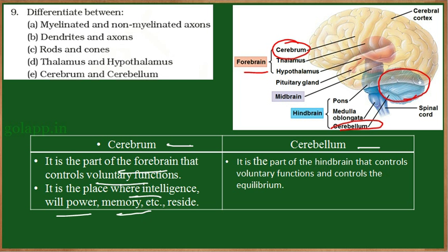The cerebellum is a part of the hindbrain that controls equilibrium, body posture, and fine voluntary movements such as playing guitar or violin. The cerebrum is mainly associated with intelligence, memory, thinking, and reasoning abilities, while the cerebellum controls voluntary movements like walking, running, playing guitar, and maintaining body posture and equilibrium. These were the differences between myelinated and non-myelinated axons, dendrites and axons, rods and cones, thalamus and hypothalamus, and cerebrum and cerebellum.